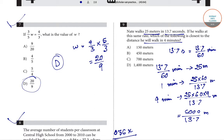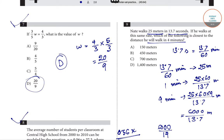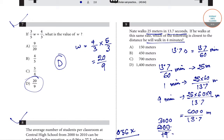For easier calculation, approximate 13.7 as 14. So 6000 / 14 = 3000 / 7, which is approximately 430 meters.